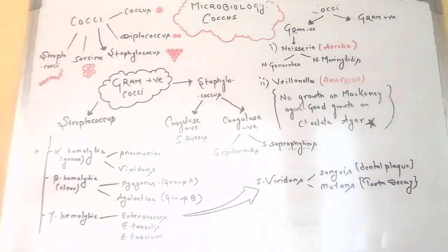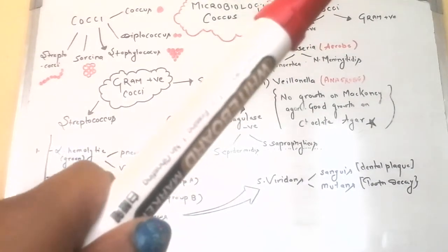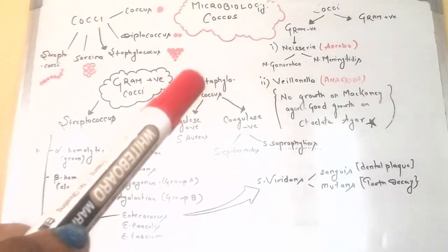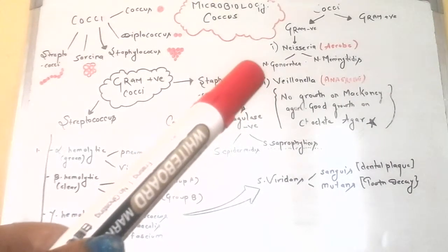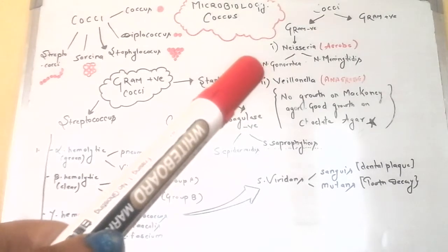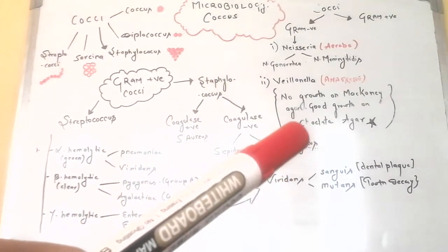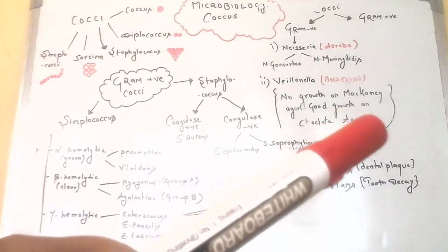Neisseria meningitidis causes bacterial meningitis — inflammation of the brain and spinal cord — after entering the body through the nose or throat. In the classification of gram-negative cocci, Neisseria are aerobes and Veillonella are anaerobes. These gram-negatives do not grow on MacConkey agar but show good growth on chocolate agar.